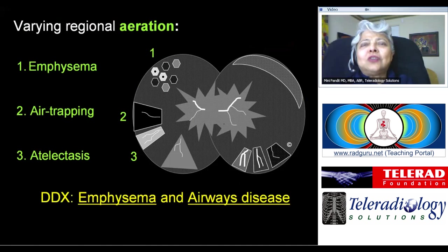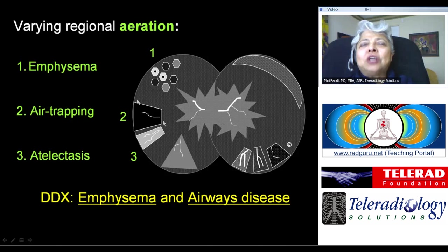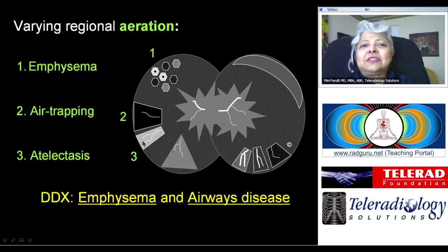Let's talk about the differential diagnosis of heterogeneous lungs caused by abnormalities of aeration. Centrilobular or panlobular emphysema can impart heterogeneity and is part of airways disease. Partial air trapping will give you overexpansion and a hyperlucent area distally. Atelectasis caused by complete obstruction of an airway will give you increased density and crowding of blood vessels. The main differential diagnoses of heterogeneous lungs caused by aeration abnormalities are emphysema and airways disease.